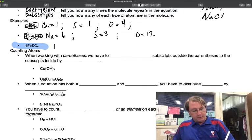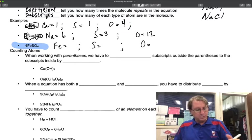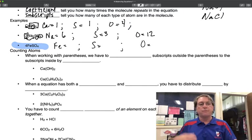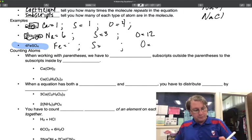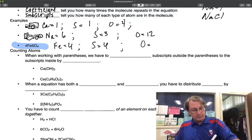So it's Fe equals semicolon, S equals semicolon, O equals. And all we're doing is we're multiplying all the numbers from the formula by four. So there are four irons, four sulfurs, and 16 oxygens.